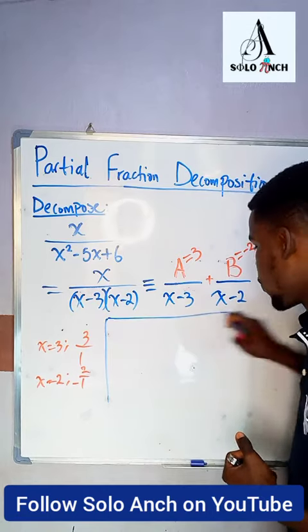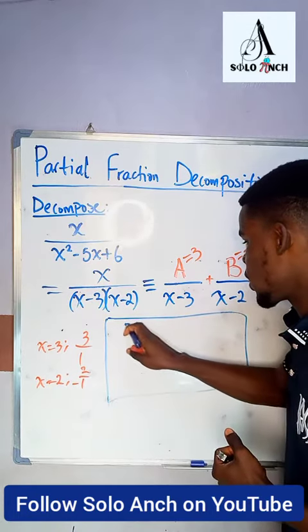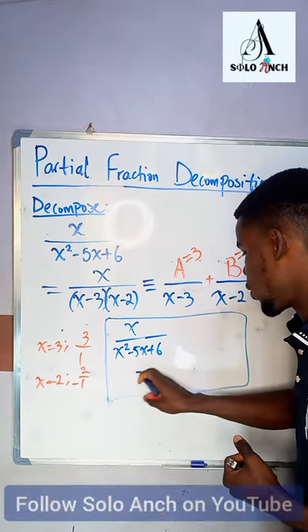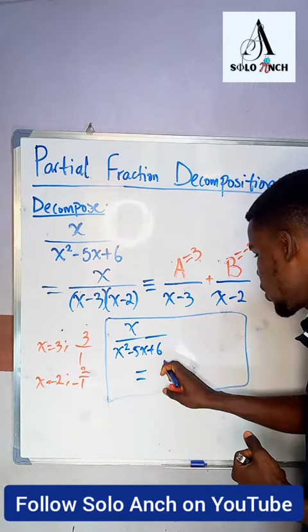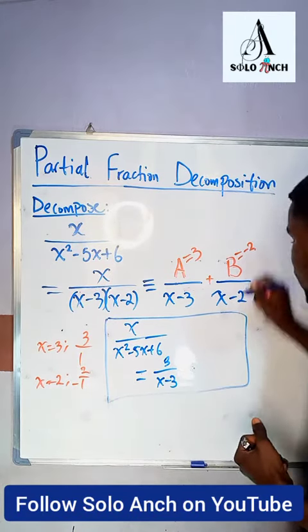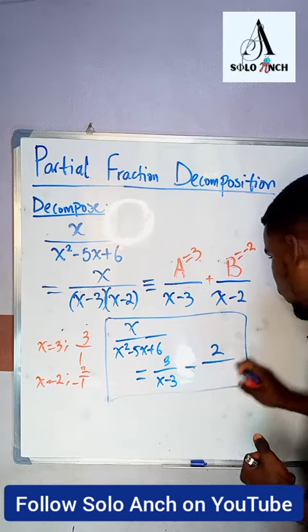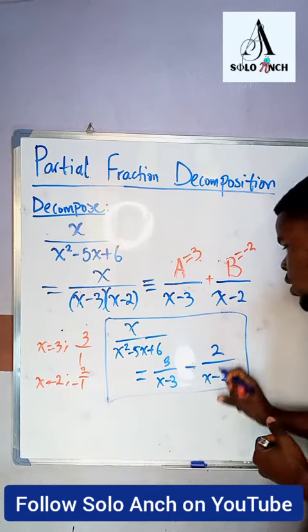So now you have this fraction to be decomposed as follows. The fraction which is x can be decomposed as 3 over x minus 3, that is 3 over x minus 3, and then negative 2 over x minus 2. This right here is it.